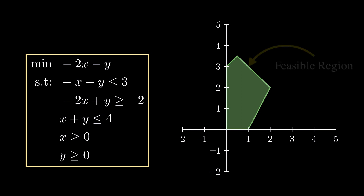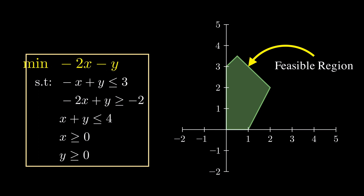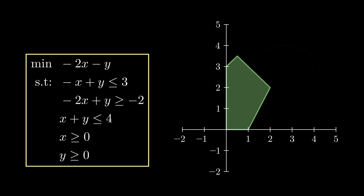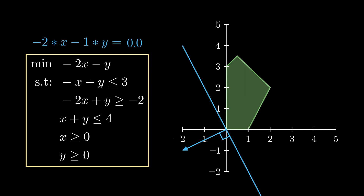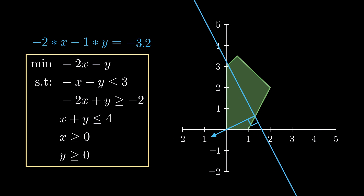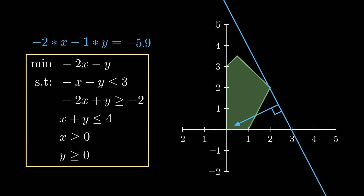This final area is called the feasible region and represents the points satisfying all of the constraints. Now we want to minimize minus 2x minus y. This is the line minus 2x minus y equals 0, and its normal vector. Minimizing the objective corresponds to shifting this line in the direction opposite of the normal vector. We shift as much as we can such that the line still intersects the feasible region, giving us minus 2x minus y equals minus 6, so the optimal value is minus 6.